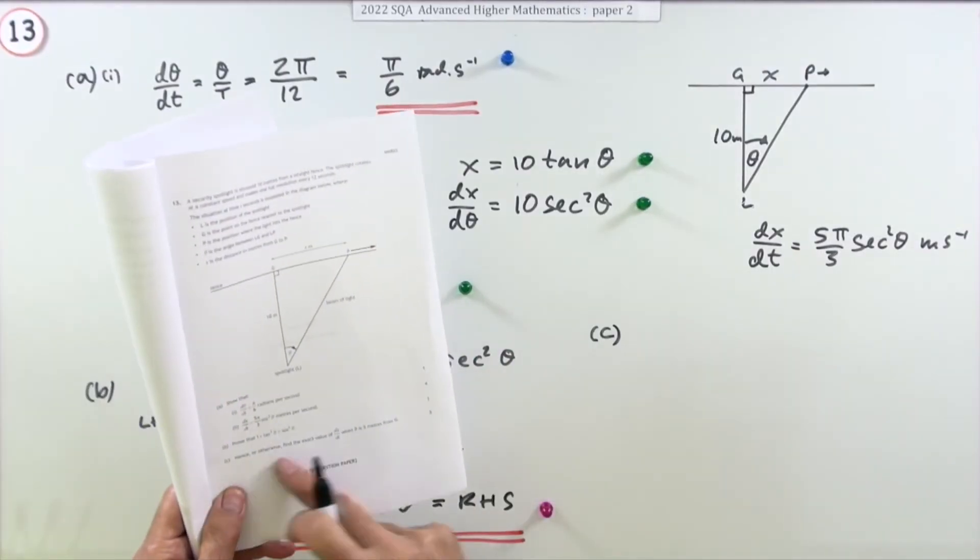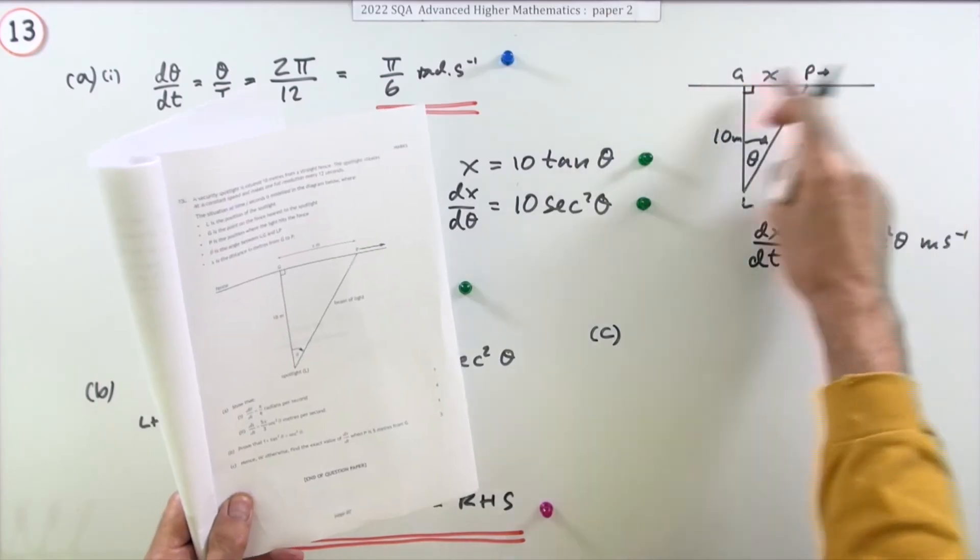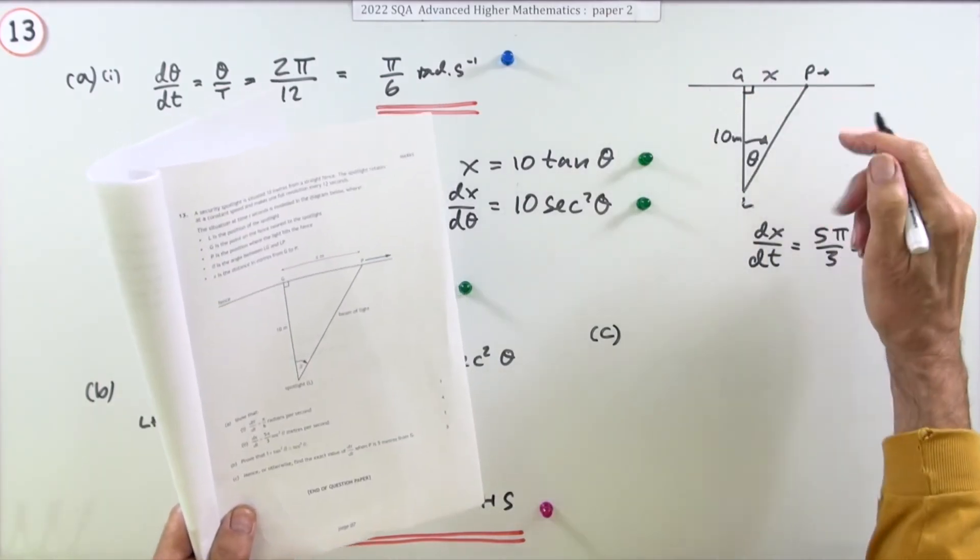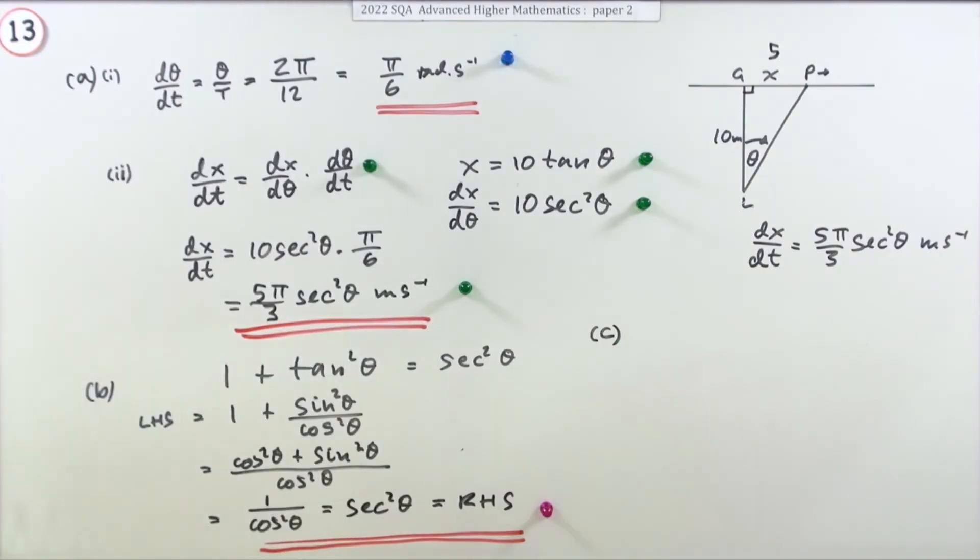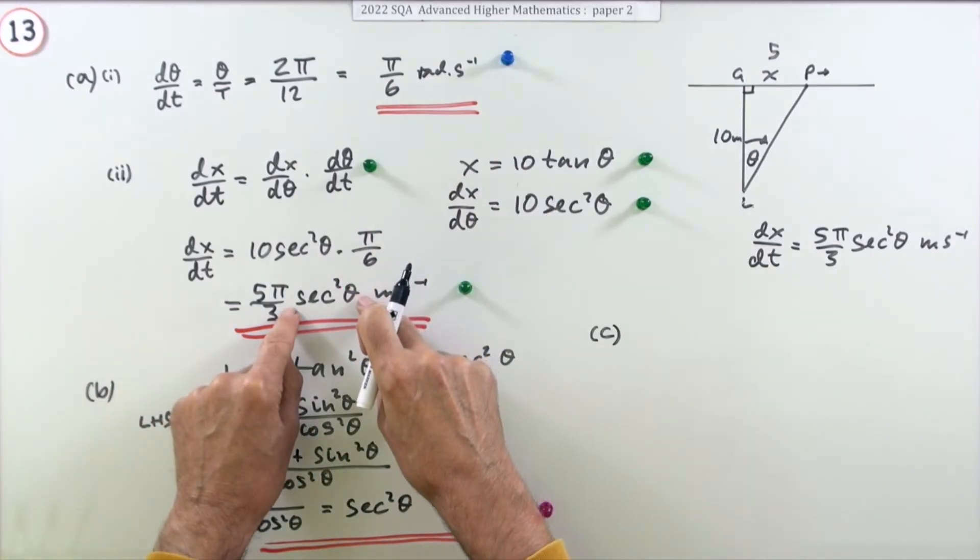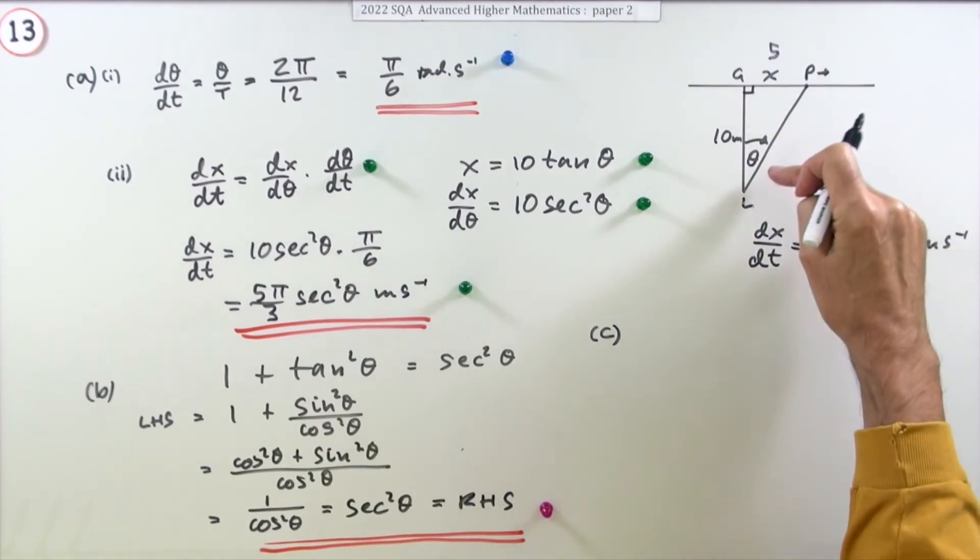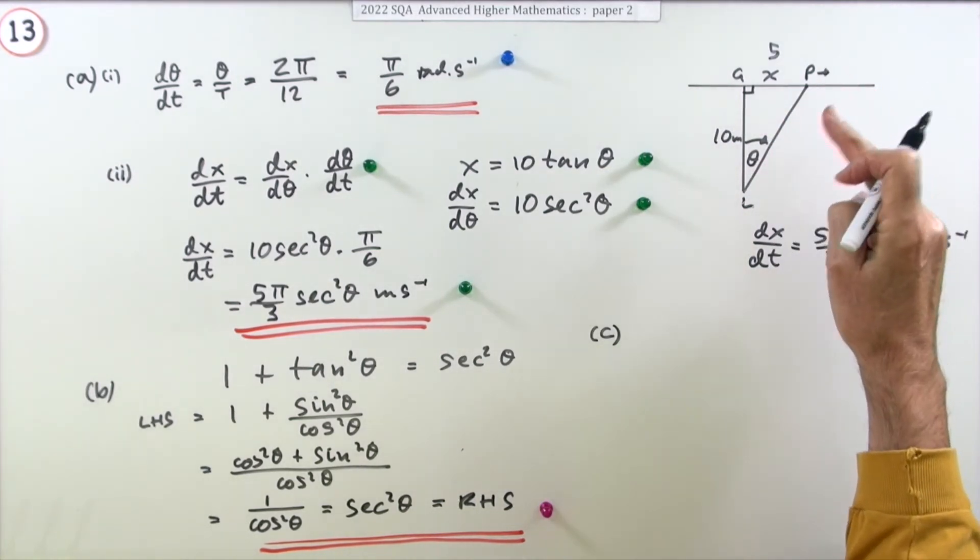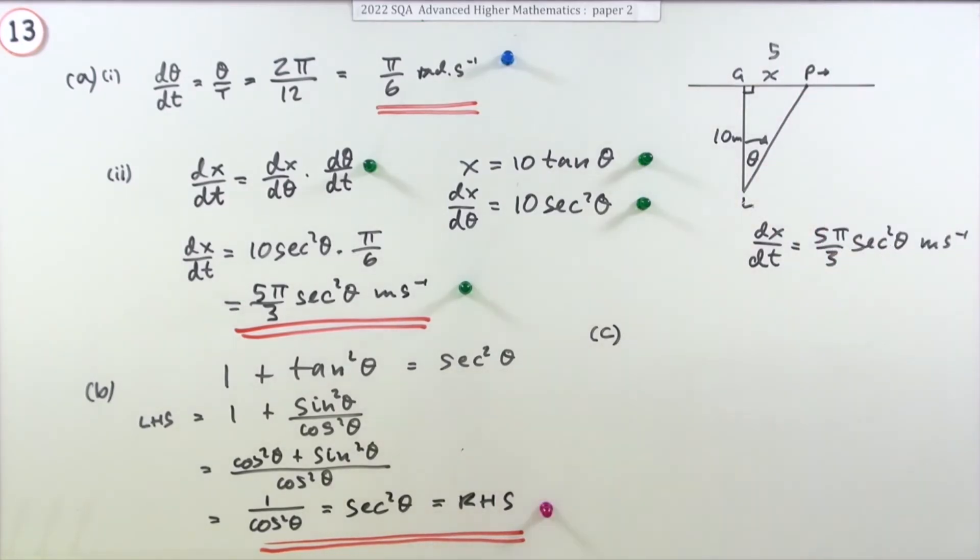Now the last part, hence or otherwise, find the exact value of dx/dt, the speed of the point P, when P is 5 meters from G, for 3 marks. Well, since I've got the expression for the speed in terms of sec θ or cos θ, remember sec is 1 over cos θ, all you've got to do is figure out what's θ, or more specifically, either tan θ or cos θ equal to when that's 5.